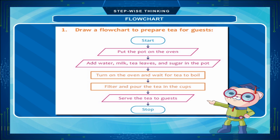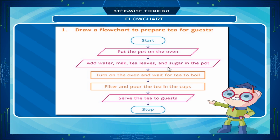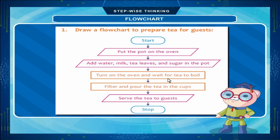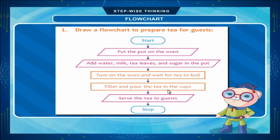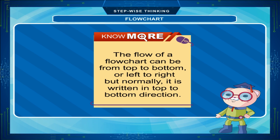Example 1: Draw a flowchart to prepare tea for guests. Start → Put the pot on the oven → Add water, milk, tea leaves, and sugar in the pot → Turn on the oven and wait for tea to boil → Filter and pour the tea in the cups → Serve the tea to guests → Stop. The flow of a flowchart can be from top to bottom or left to right.